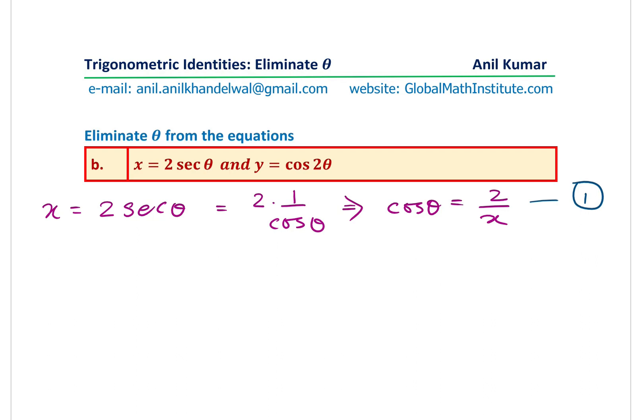Now the second equation in this particular case is y equals to cos 2 theta. Now you also know that cos 2 theta can be written as 2 times cos square theta minus 1. So that's another identity which you learn for double angle. Now in this, you could substitute the value of cos theta equals to 2 over x and then eliminate theta altogether.